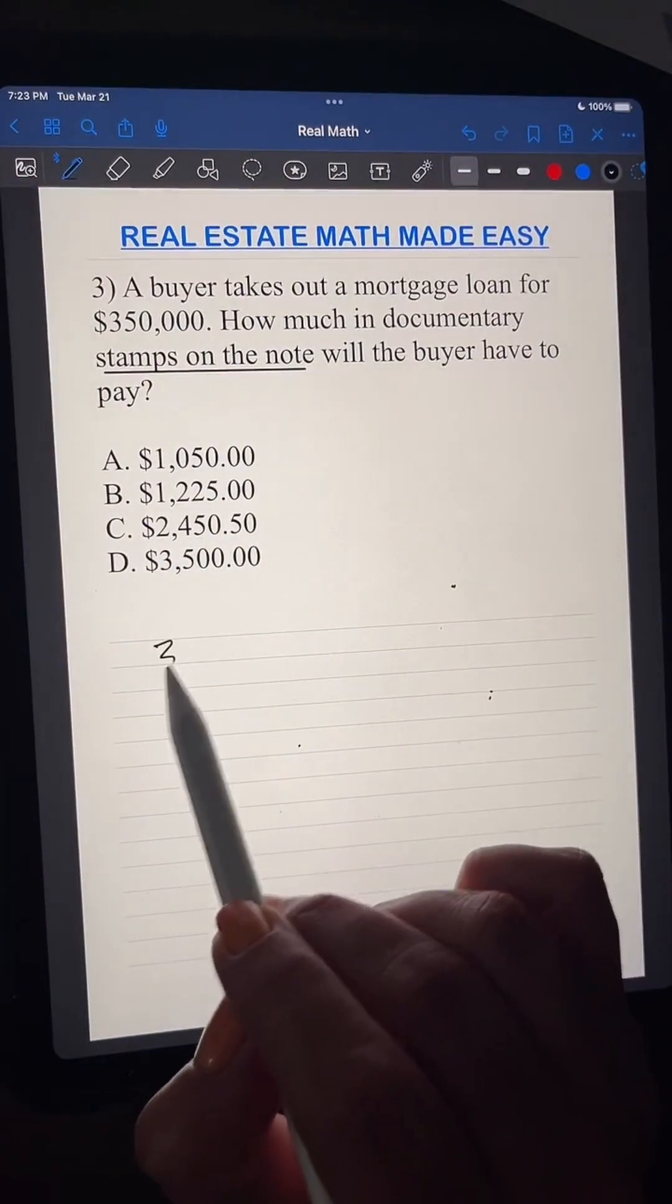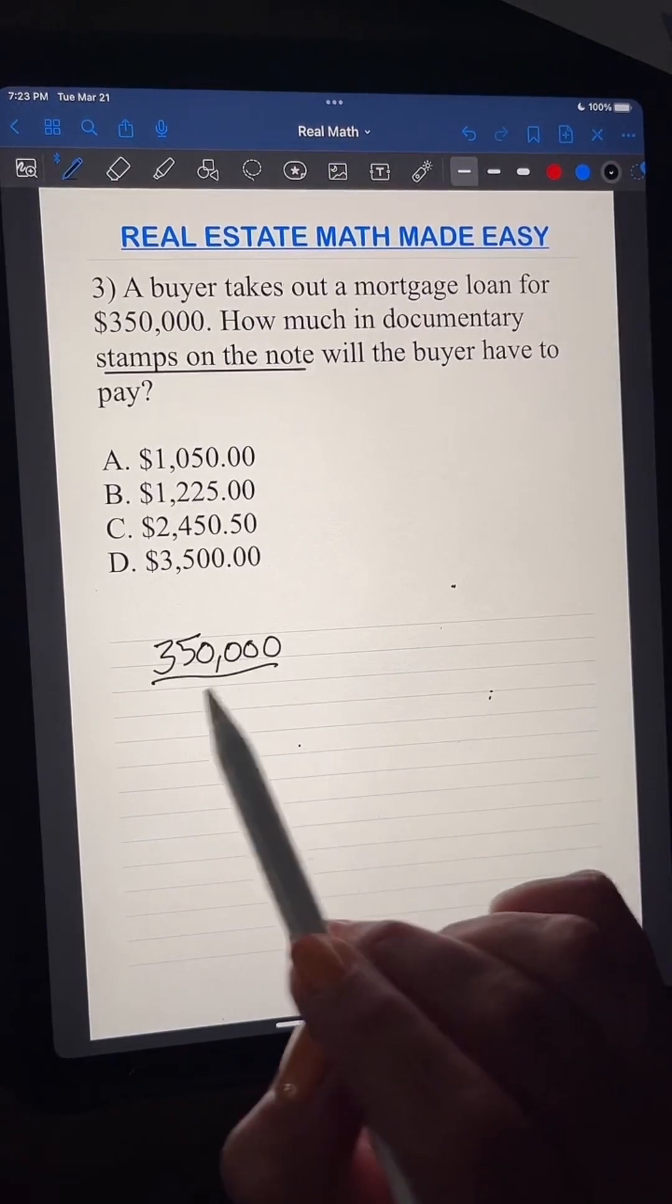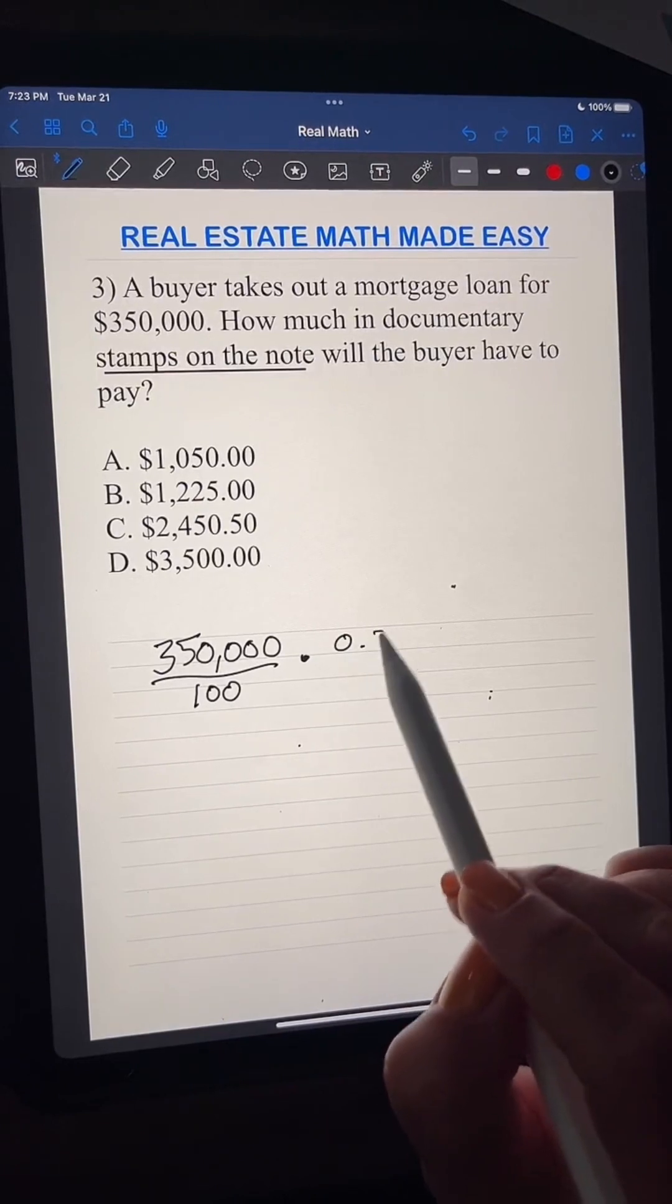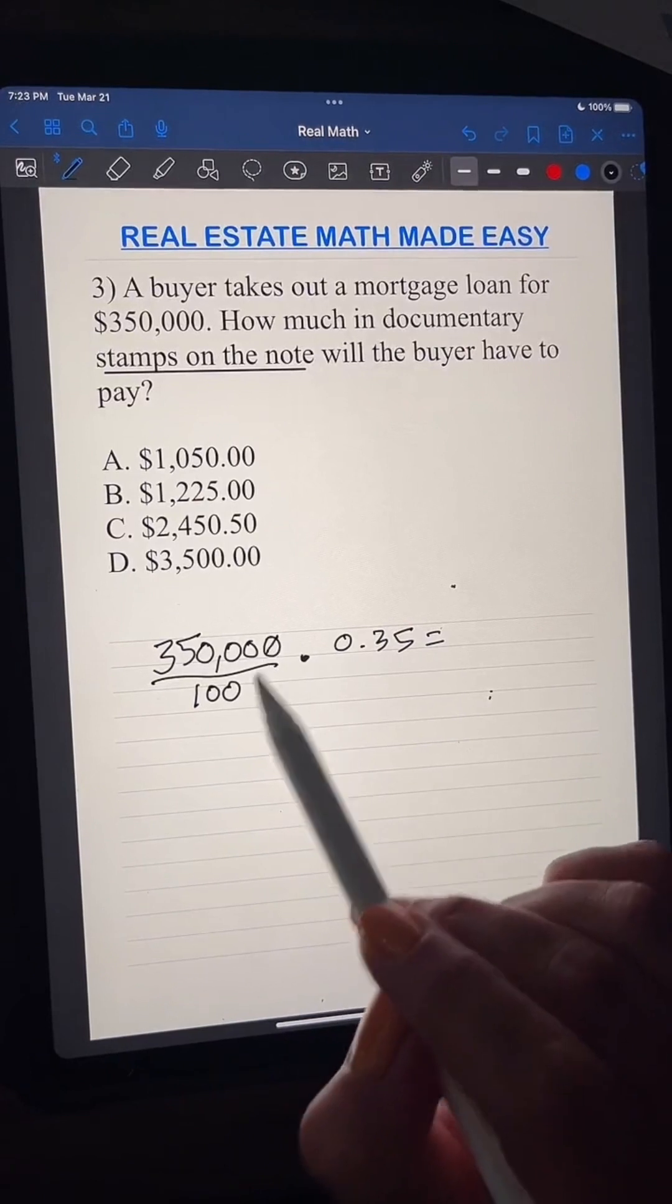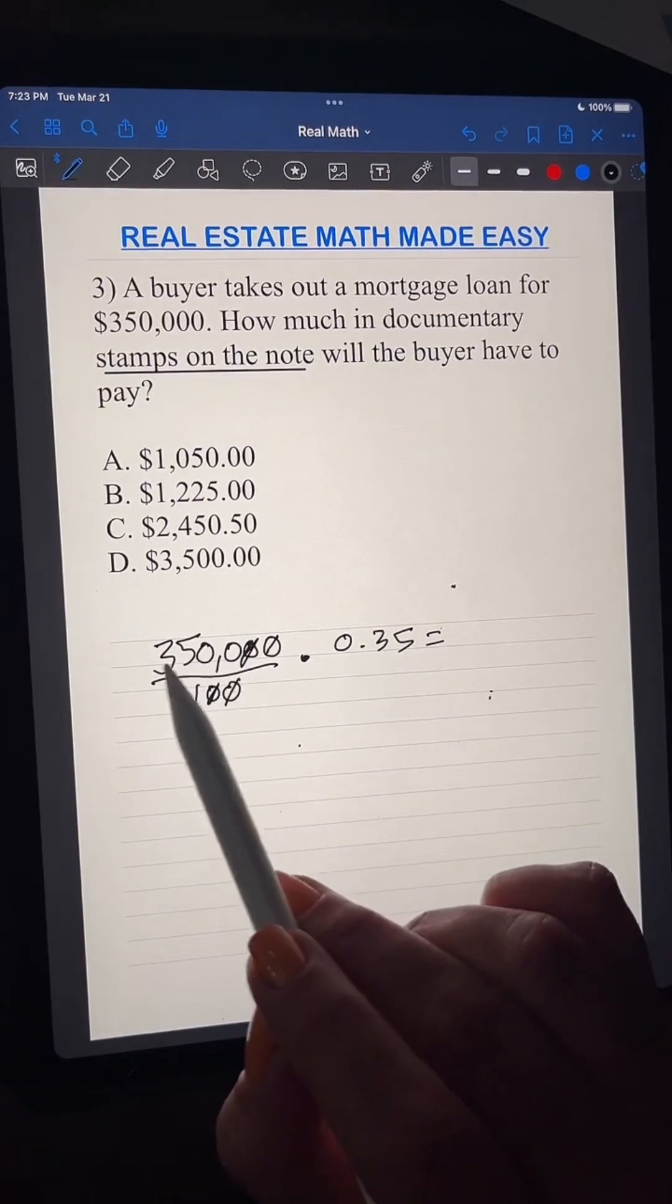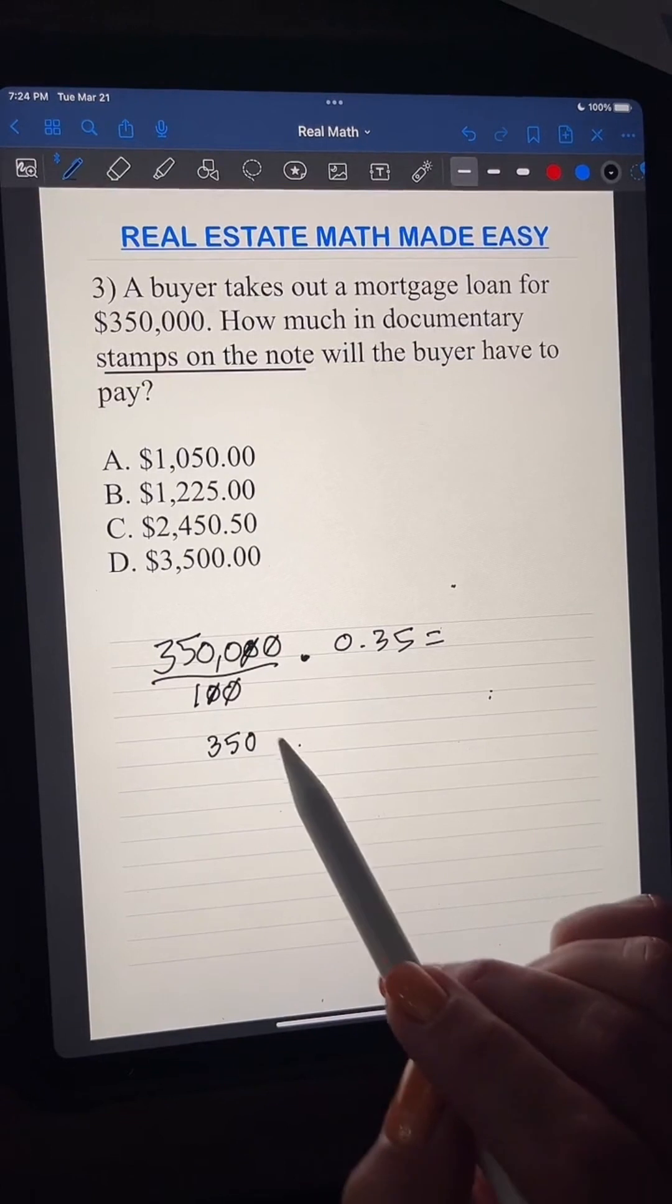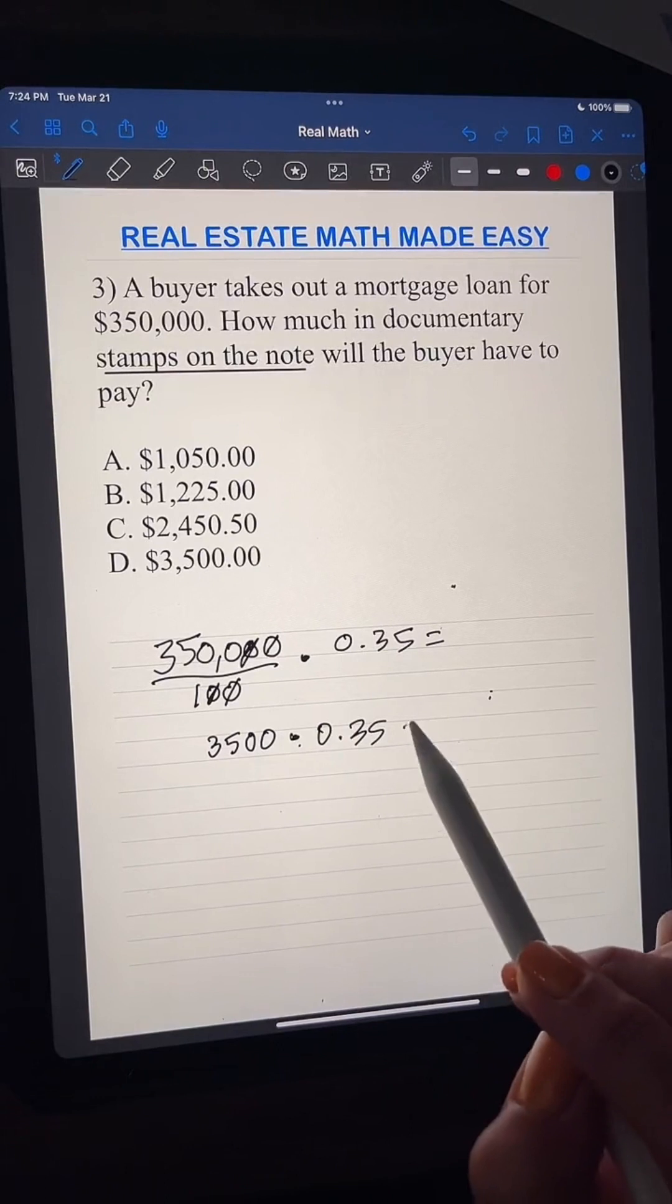So we say $350,000 divided by 100 times 35 mils, okay? Since this and this is a zero, we could cancel that out. Since this is a zero, we could cancel that out.